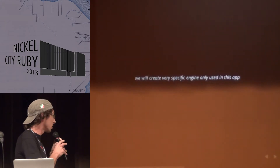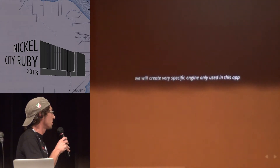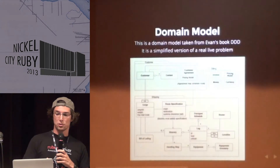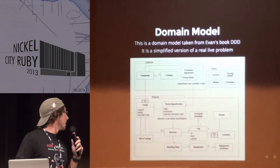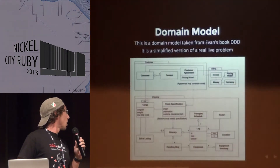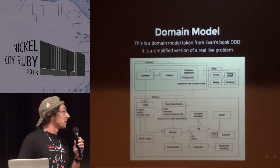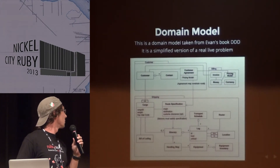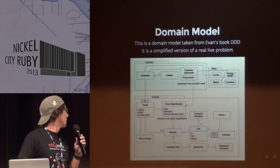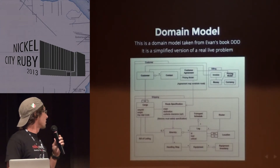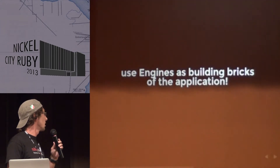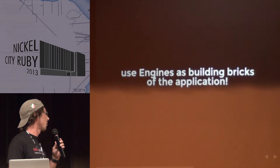So what we're going to do is create a very specific engine only used in this one app — not a reusable engine package. This is a domain model I've taken from Evans' Domain-Driven Design. We're not going to build that in real time, but it's just a simplified version of a real-life problem. We're going to use engines as building blocks of our application.